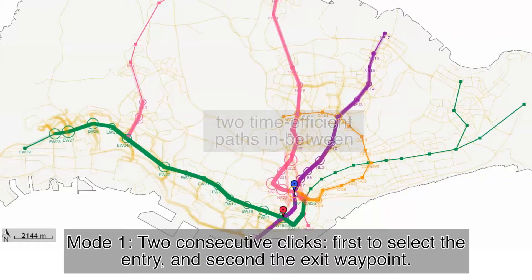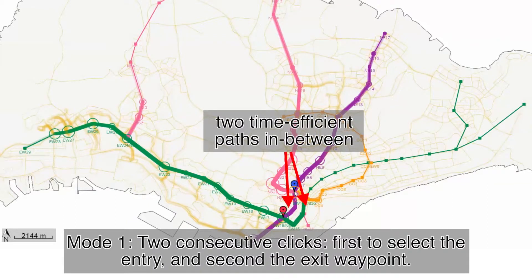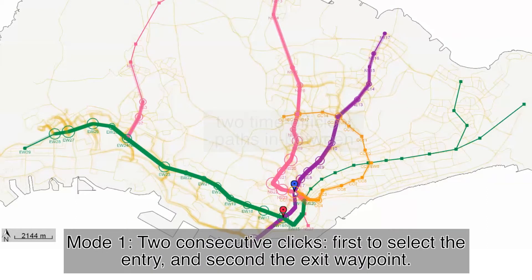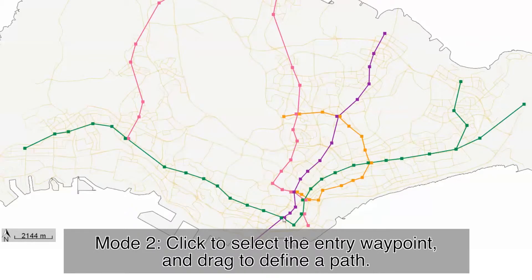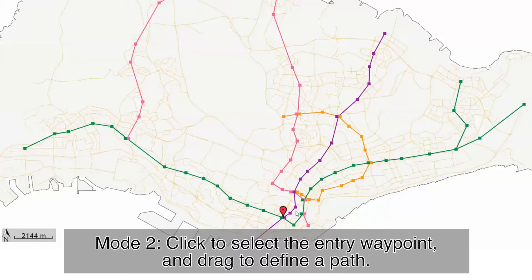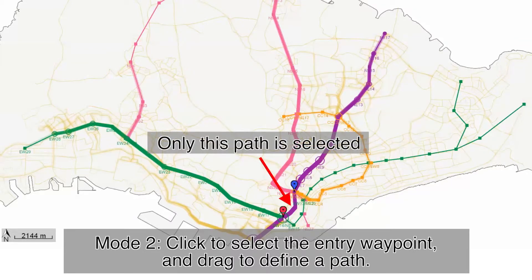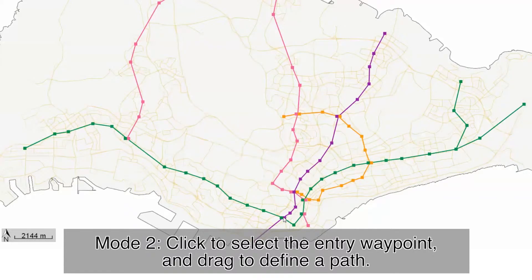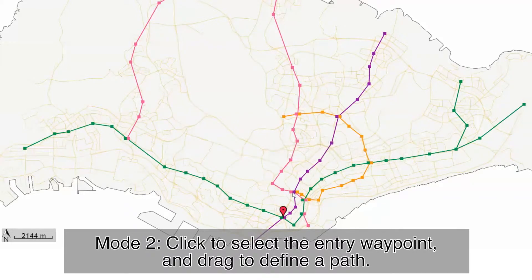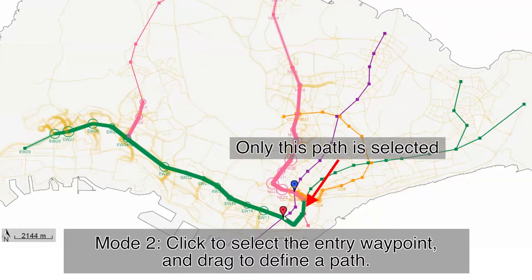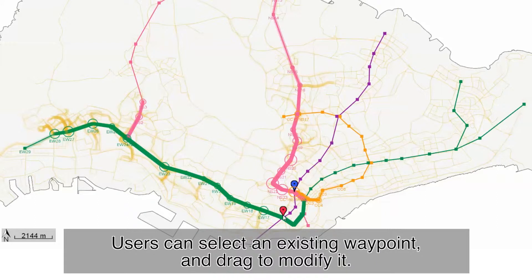Sometimes we have multiple time-efficient paths in between waypoints. Mode 2: Click to select the entry waypoint, and drag to define a path. Users can select an existing waypoint and drag to modify it.